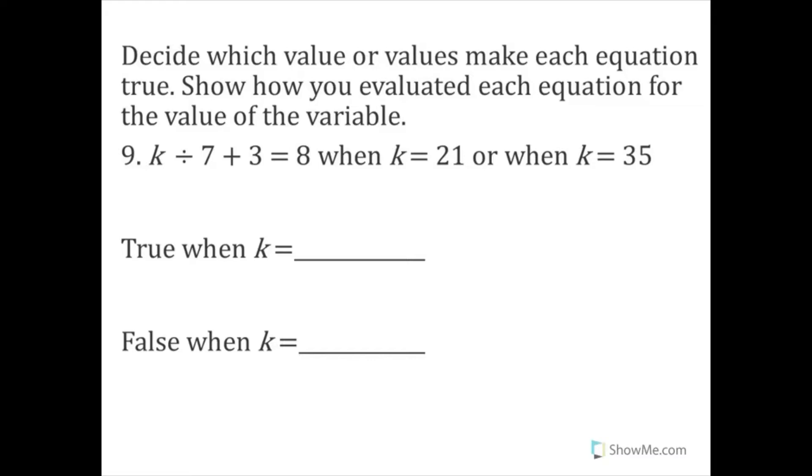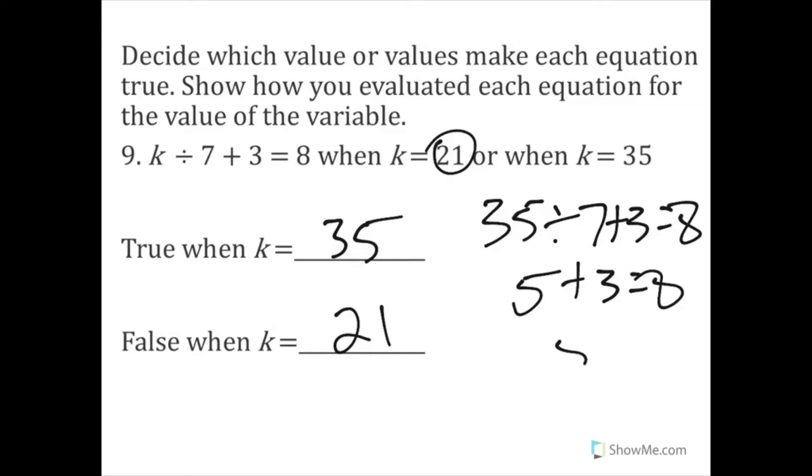So it says, true when k equals, well, let's see. Is it true when k equals 21? Let's see. So 21 divided by 7 plus 3 equals 8. 3 plus 3 equals 8. 6 equals 8. Well, that's not true. So we can say 21. And then, look, we know it's going to be 35 here because it's the only one left, right? But we're still going to do our work. So 35 divided by 7 plus 3 equals 8. 5 plus 3 equals 8. 8 equals 8. All righty.